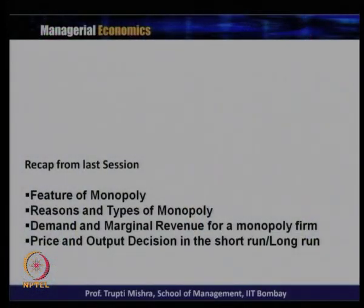If you remember, we talked about the features of monopoly first — the different characteristics — then we discussed the reasons and types of monopoly, then demand and marginal revenue for a monopoly firm, and then price and output decisions in the short run and long run. In the short run the firm may get normal profit, super normal profit, or incur loss, but generally in the long run the firm never incurs a loss — they try to get at least normal profit, if not super normal profit.